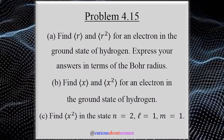Let's see what we're tasked with actually doing. Part A: we want to find the expectation of r and expectation of r² for an electron in the ground state of hydrogen, and express that answer in terms of the Bohr radius. Part B: find the expectation of x and x² for an electron in the ground state. Finally, Part C: find x² in the state n=2, l=1, and m=1 — our second excited state with the varying orientations given by l and m.